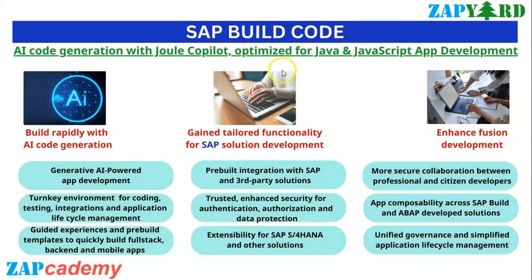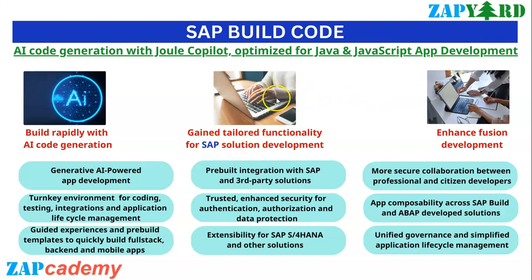Built on SAP BTP, SAP Build Code is a revolutionary tool which is optimized for Java and JavaScript application development, providing a complete coding, testing, integration, and application lifecycle management environment.